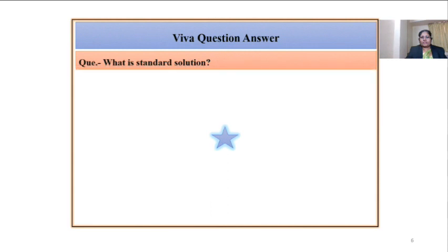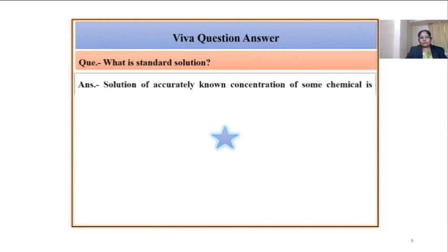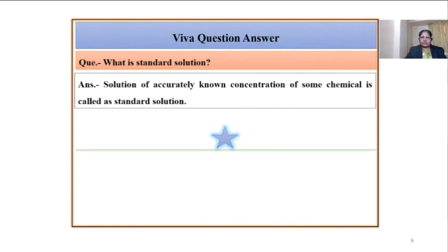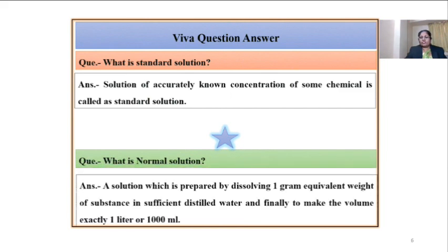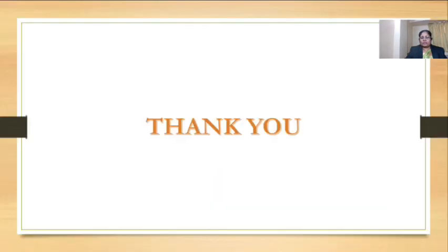Question: What is a standard solution? A solution of accurately known concentration of a chemical is called a standard solution. Question: What is a normal solution? A solution prepared by dissolving one gram equivalent weight of a substance in sufficient distilled water and making the volume exactly one liter or 1000 ml is called a normal solution.